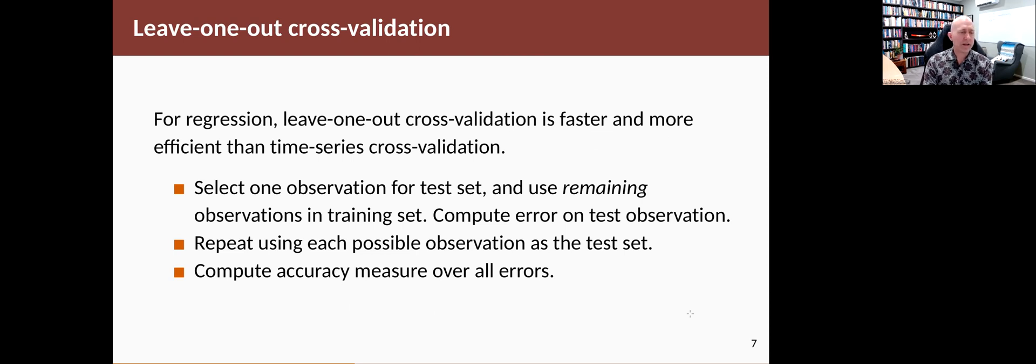Also, the nice thing about leave-one-out cross-validation in the regression context is that it's really fast to compute because you can do it in one go. So conceptually, you're leaving one observation out of the test set and use the remaining observations to fit. And you would think that means you have to fit T different models where T is the number of observations. But it turns out that there's a fast way of doing that computation that you only need to fit once to all the data.